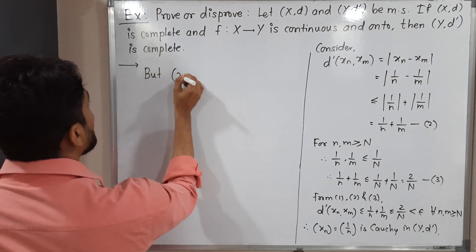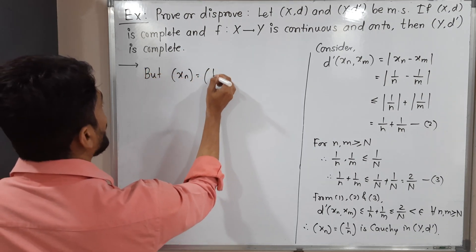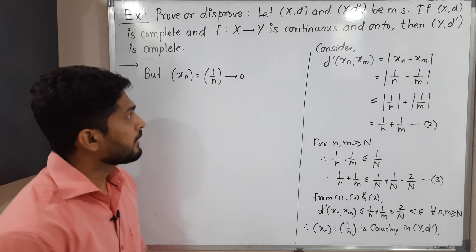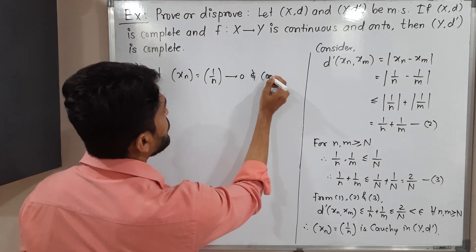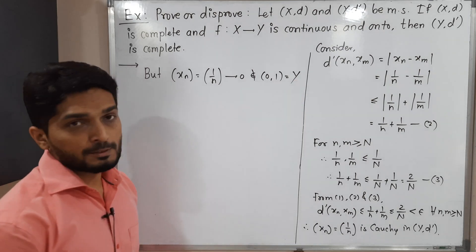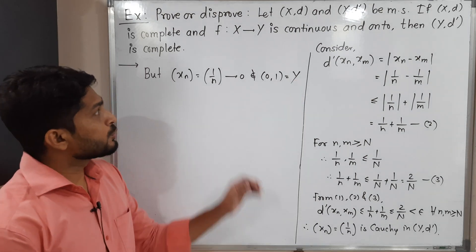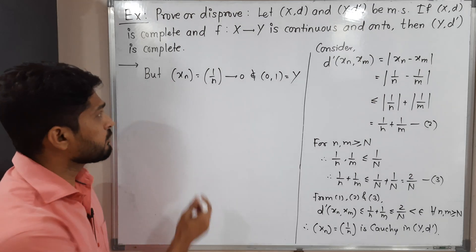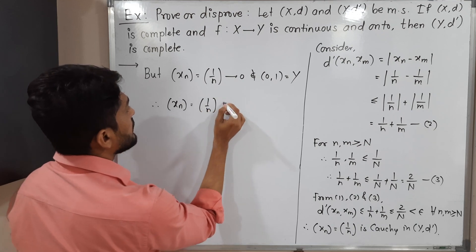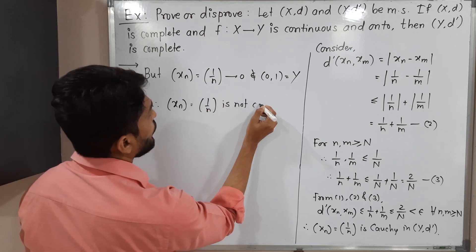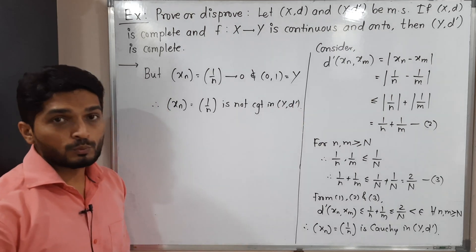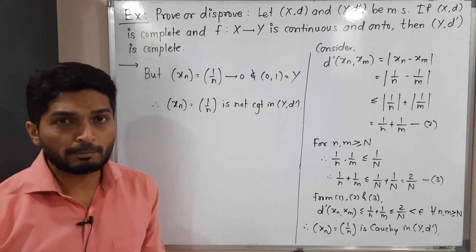The sequence x_n = 1/n converges to 0 in the usual metric. However, 0 does not belong to the open interval (0, 1), which is our metric space Y. Therefore x_n = 1/n is not convergent in (Y, d'), and we have found a Cauchy sequence that is not convergent. Therefore (Y, d') is not a complete metric space.